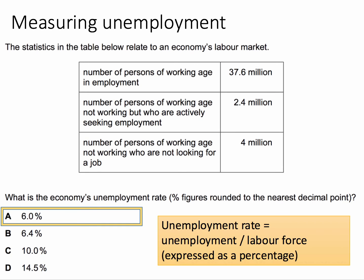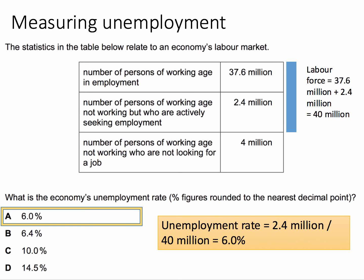The unemployment rate is a common measure — it's the level of unemployment as a percentage of the labour force. The labour force is the sum of people in work plus the unemployed, because they're actively looking for work. Numerically, that's 37.6 million plus 2.4 million, which gives a total of 40 million people in this example. So we know there are 2.4 million unemployed out of a labour force of 40 million. 2.4 million divided by 40 million expressed as a percentage is 6%, which is A.